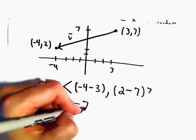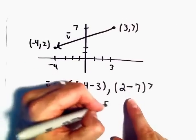So negative 4 minus 3, that's negative 7. 2 minus 7, that's going to be negative 5.